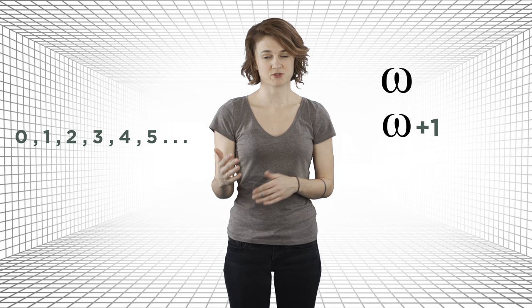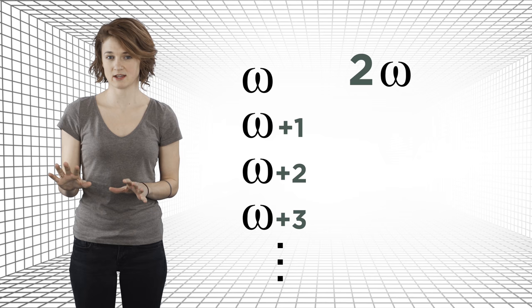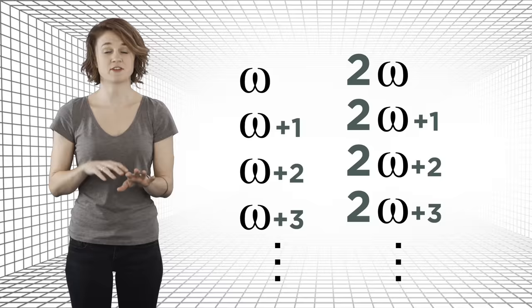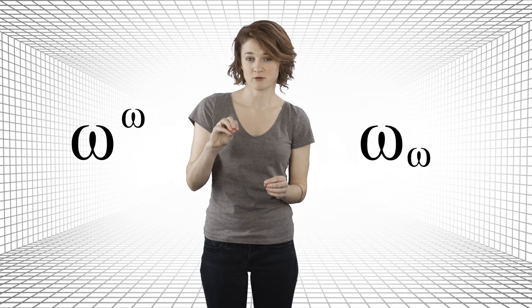The smallest ordinals are finite. Zero, one, two, three, four, five, and so on. And then after all that comes omega, the first infinite ordinal. Then comes omega plus one, omega plus two, omega plus three, and so on. Then comes two times omega. Then two times omega plus one, two times omega plus two, and so on. Then there's three times omega, four times omega, and so on. After all that, there's omega times omega, a.k.a. omega squared. Then omega cubed, omega to the fourth, and so on. After all that, there's omega to the omega. And it kind of just keeps going. Omega to the omega to the omega, and so on.